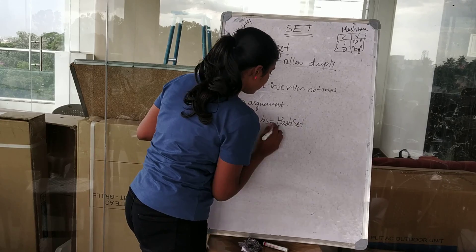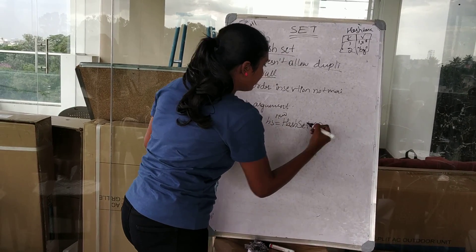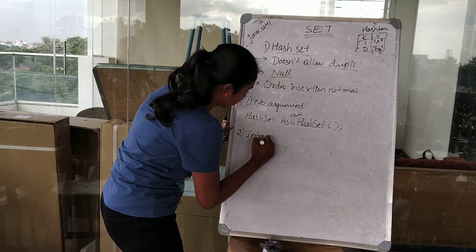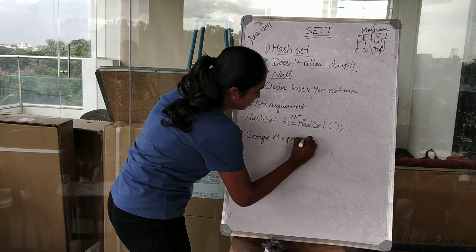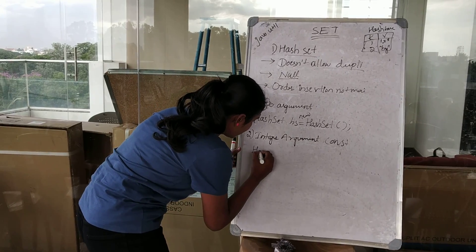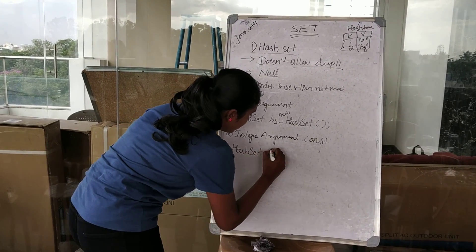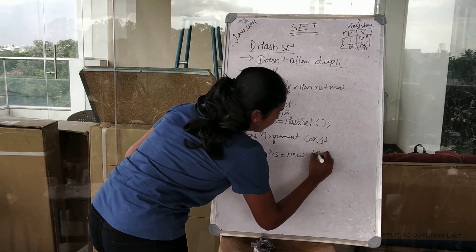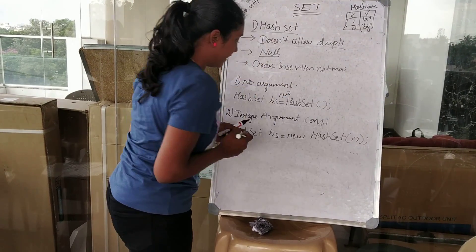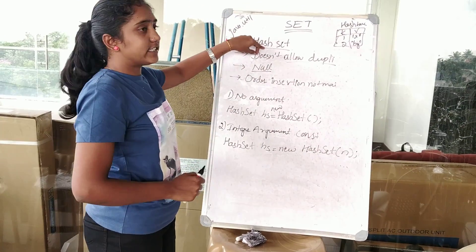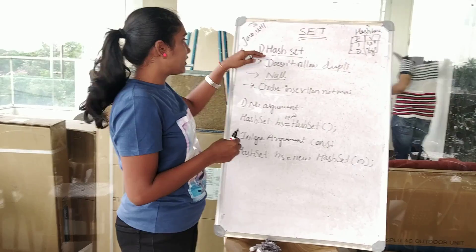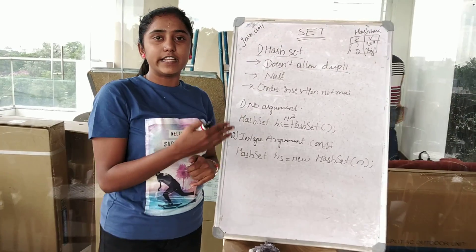We have some concepts on the hash set: a no-argument constructor, an argument constructor, and an integer argument hash set. A hash set reference area — new hash set — where n is an integer argument. As hash set is built from the hash table, it doesn't allow duplicates. You need the function, because the hash method is overridden in the class.